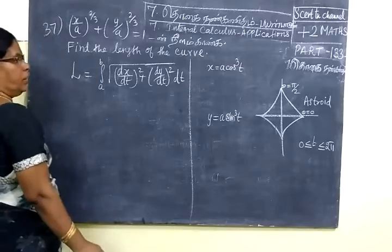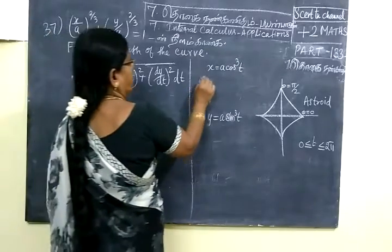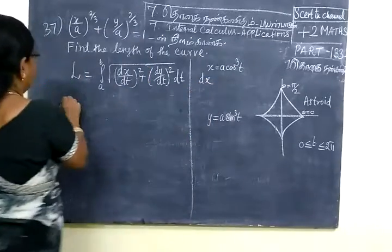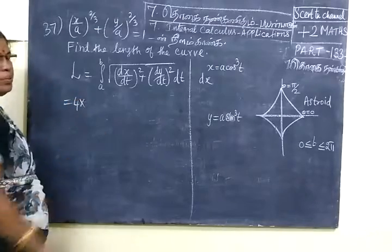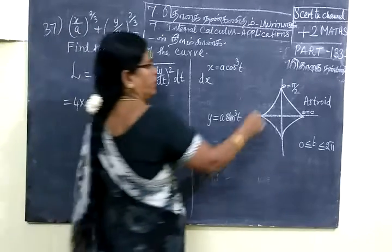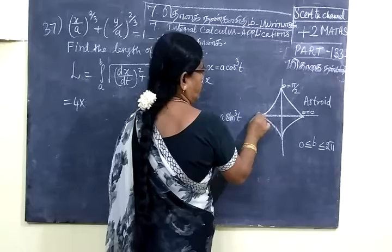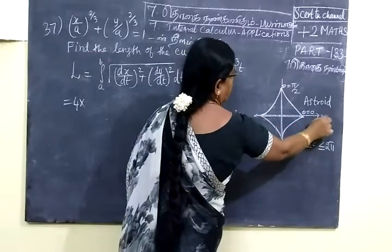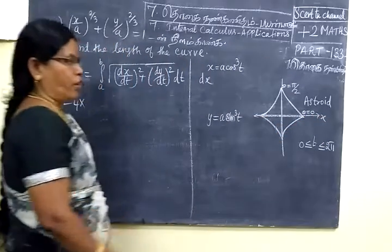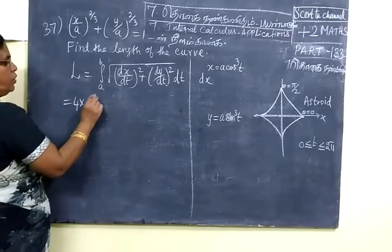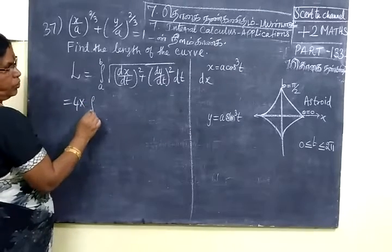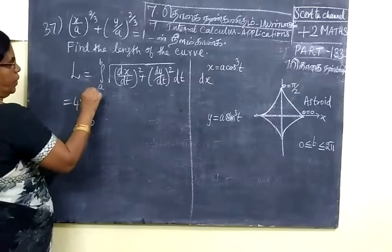So for that you are finding dx/dt. This is 4 times, because it is symmetrical about both the axis. x-axis and y-axis. So 4 times of one arc. So 4 into limit 0 to π/2.